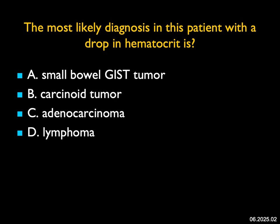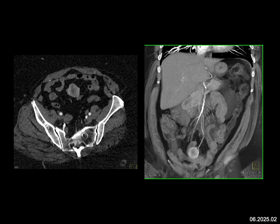The most likely diagnosis in this patient with a drop in hematocrit: we see a mass near small bowel way down in the lower abdomen. On the volume-rendered views, you see it's fed by branch vessels off the SMA, which are very vascular. The mass is abutting bowel. It could be a carcinoid tumor, but 70% of carcinoids do calcify, making it a bit less likely. I don't see a desmoplastic reaction.